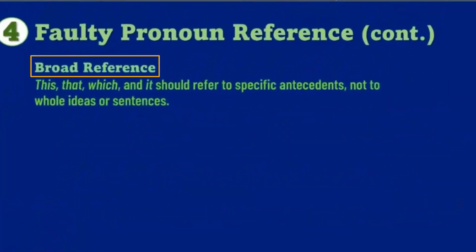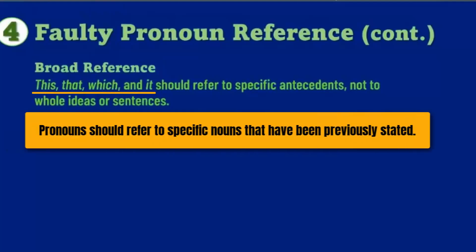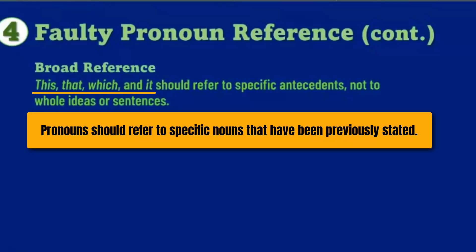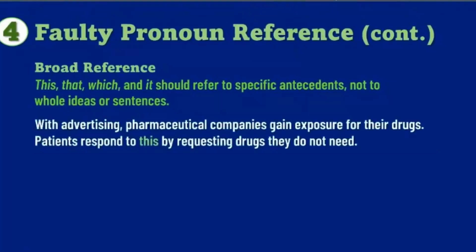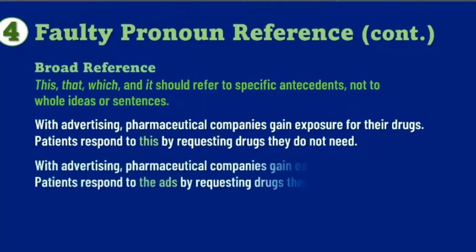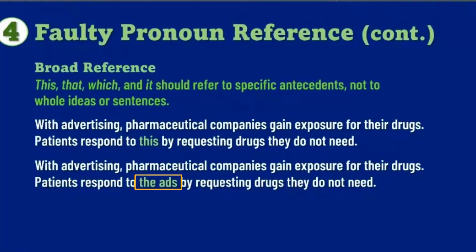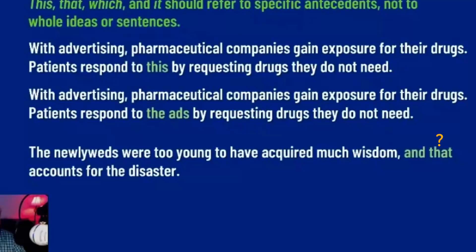Broad reference really does often stop readers dead in their tracks. 'This,' 'that,' 'which,' and 'it' are the most common culprits, and the problem occurs whenever you attempt to use those words to refer back to the entire idea implied in the sentence. For example: 'With advertising, pharmaceutical companies gain exposure for their drugs. Patients respond to this.' What does 'this' refer to — the advertising, the exposure, the whole strategy? You have to figure out what you meant and make it specific: patients respond to the ads, to the exposure, to the strategy. Similarly, 'The newlyweds were too young to have acquired much wisdom, and that...' — does 'that' refer to their youth, their lack of wisdom, or both? Don't know. Broad reference. Make it specific.